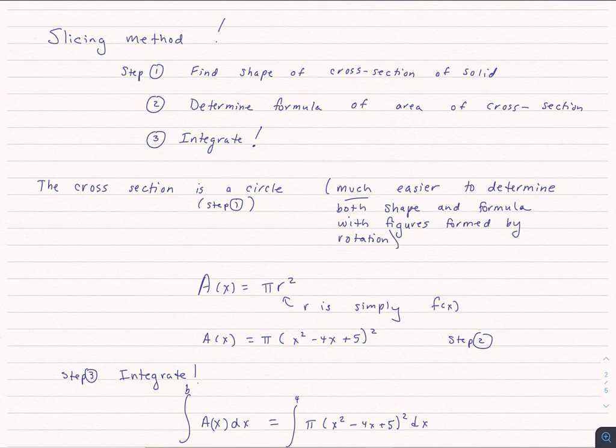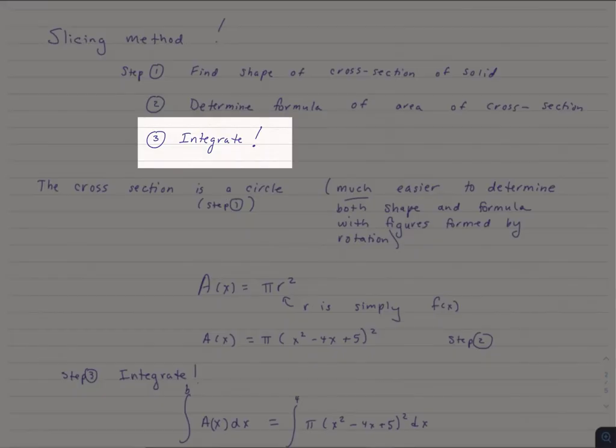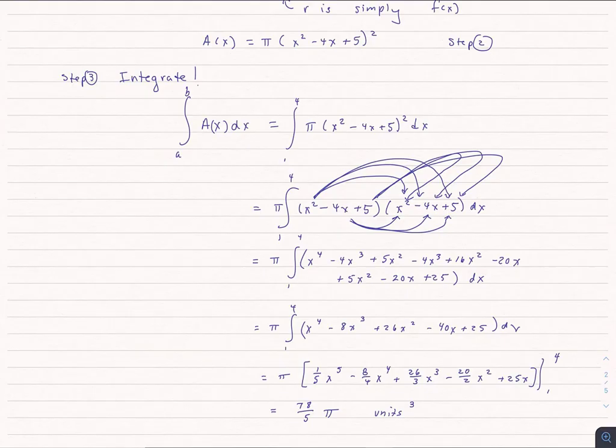So now what do we do? Just like we've done before, step 3, we integrate. I wrote this out mainly because students are really good at foiling, right?